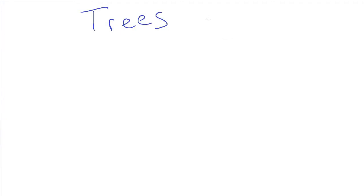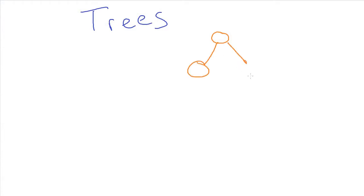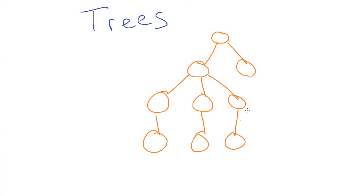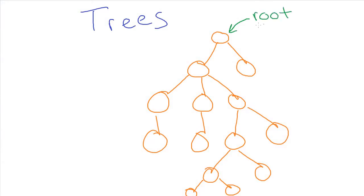In computer science there are lots of different types of trees we can make. Some trees are binary trees, and we'll talk about what that means in a second, but some trees aren't. A tree is any kind of structure where you have nodes being connected, but unlike in a linked list where the nodes are connected in a linear fashion, with a tree they are constructed in a hierarchical fashion, going down like this. You can hopefully see why it's called a tree because they sort of look like the kinds of trees that grow on the ground.